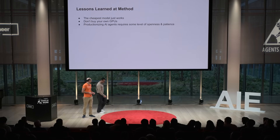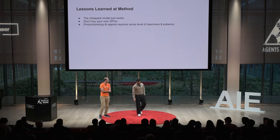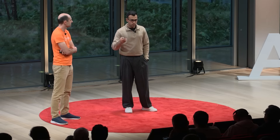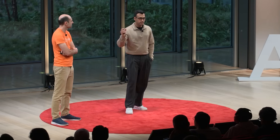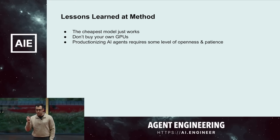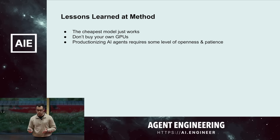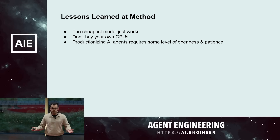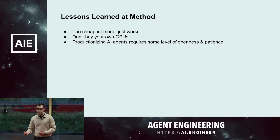Just to wrap up: the reason we put 'two engineers' in the title is because it's not that complicated. You can get away with using the cheapest model — we identified a specific use case and used the cheapest model that was out there. We fine-tuned it, and we already had the data from GPT in production, so we didn't have to go digging for data.